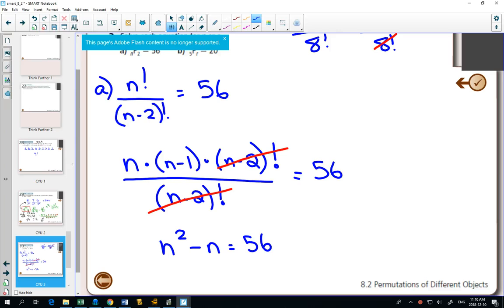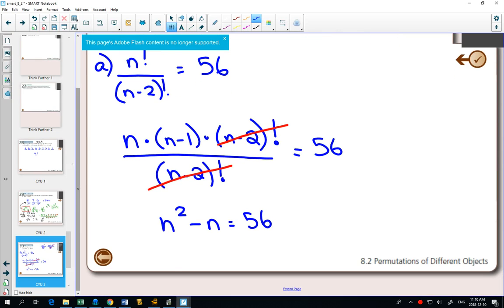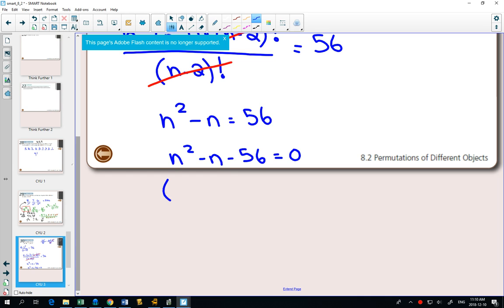Yes, you do. It's quadratic. We make one side equal to 0 and factor. It will be n minus 8 and n plus 7. So our possibilities are n equals 8 and n equals negative 7.